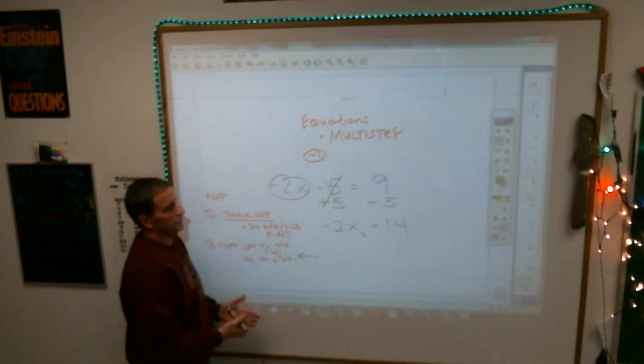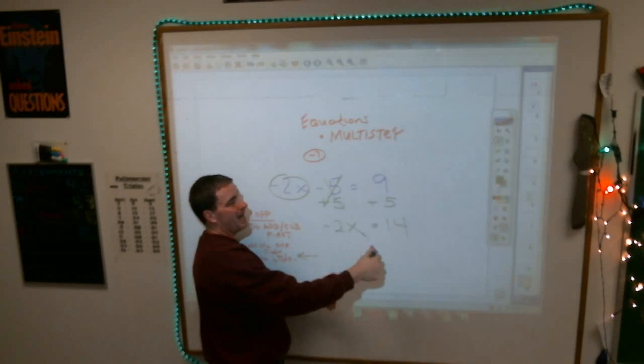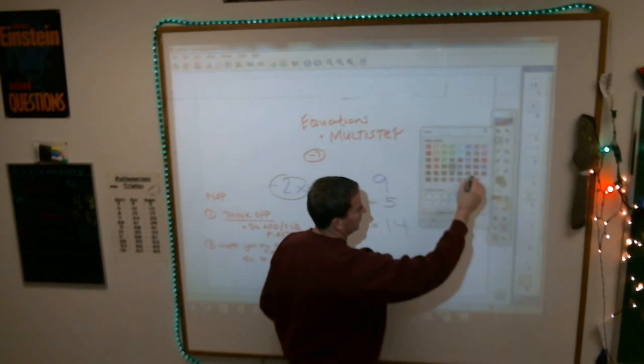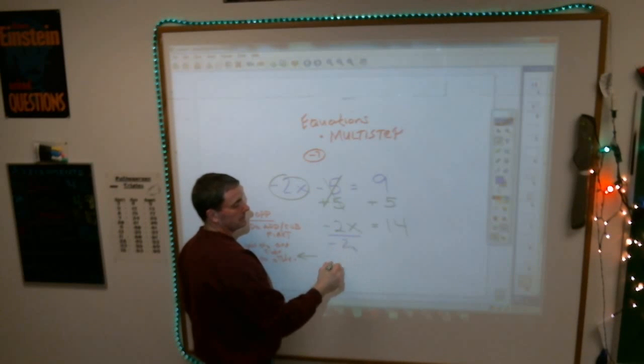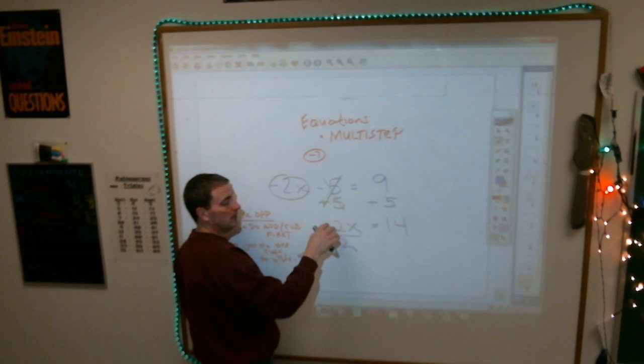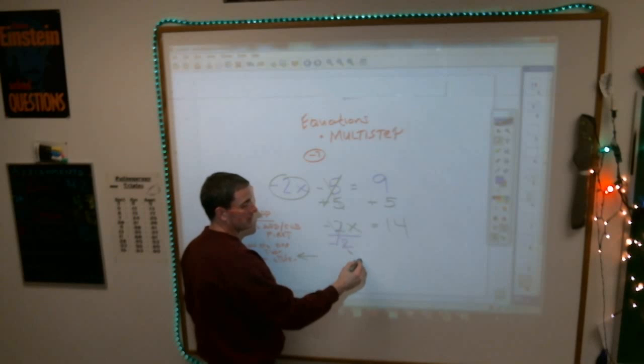And now what's left, you have to get rid of this multiplication thing, negative two times x. So you do the opposite of multiplying by a negative two. You need to write this down. You need to do this, show me this work on your paper. Negative two divided by negative two goes away. It just gives you a one x, which is x.